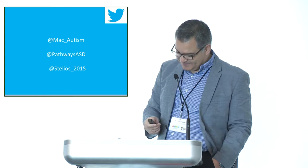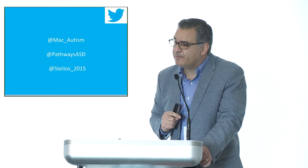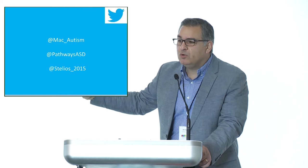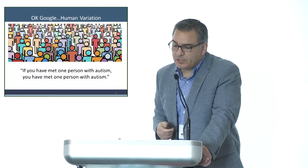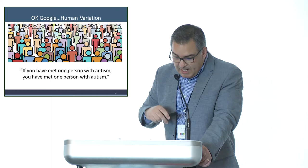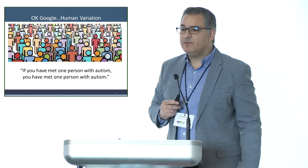I have the privilege of being a parent to two six-year-old twins — Harris and Katerina, a boy and a girl. They've recently taught me how to use the OK Google function. So I said, 'OK Google, human variation.' And this is one of the images that comes up when you say 'human variation,' and it is directly relevant to a phrase that we use in the autism community: if you have met one person with autism, you have met one person with autism.